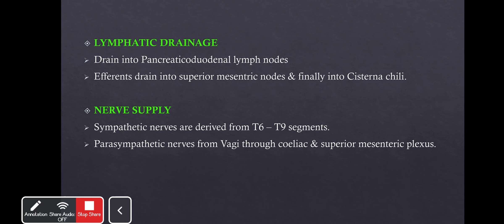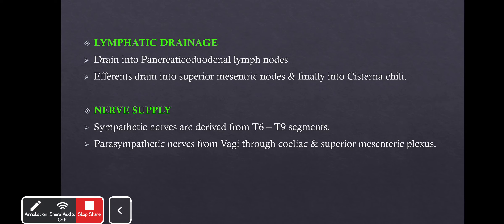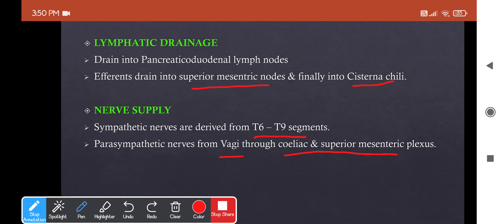Regarding lymphatic drainage: lymph from the duodenum drains into the pancreaticoduodenal lymph nodes; efferents from these nodes drain into the superior mesenteric nodes, and finally into the cisterna chyli through the intestinal lymph trunk. For nerve supply: sympathetic nerves are derived from T6 to T9 spinal cord segments, and parasympathetic fibers arise from the vagus nerve, traveling through the celiac and superior mesenteric plexuses.